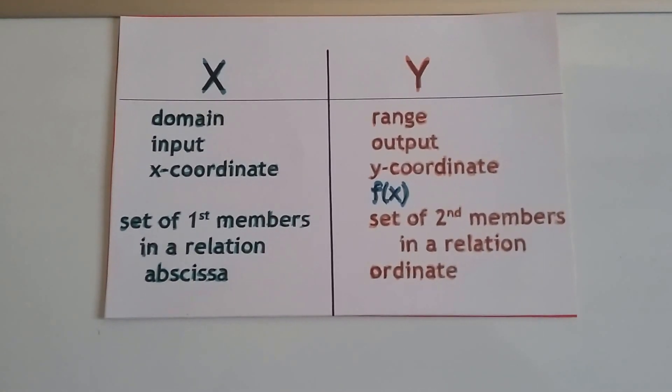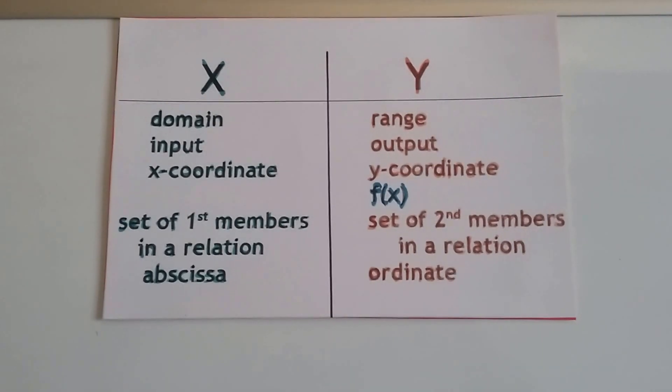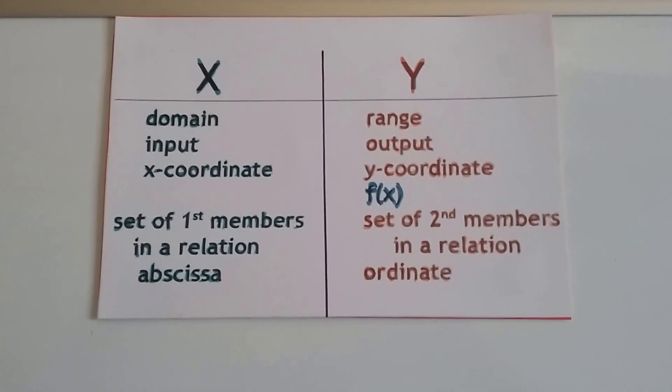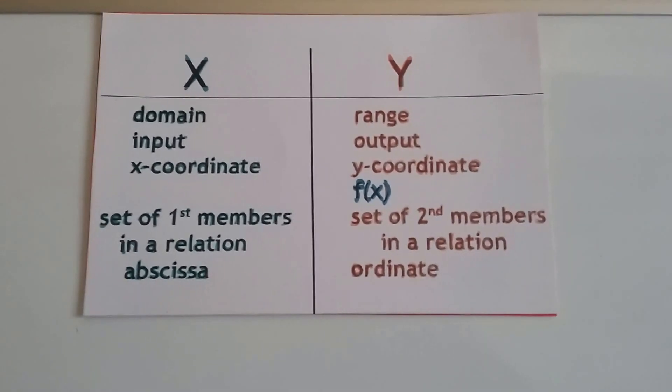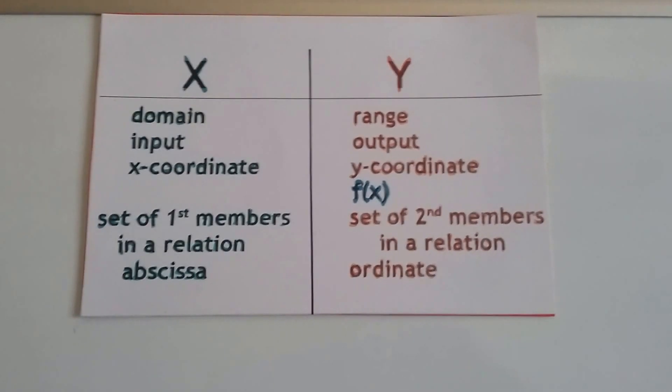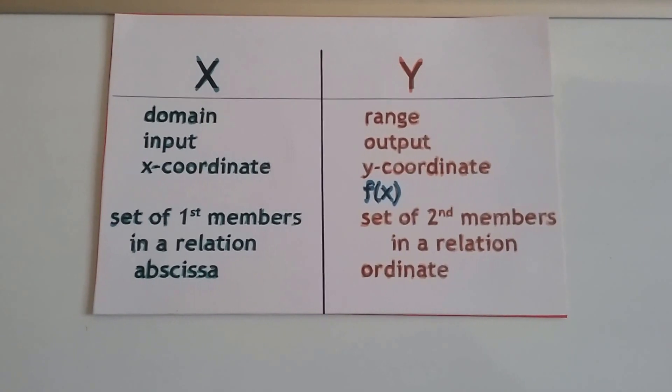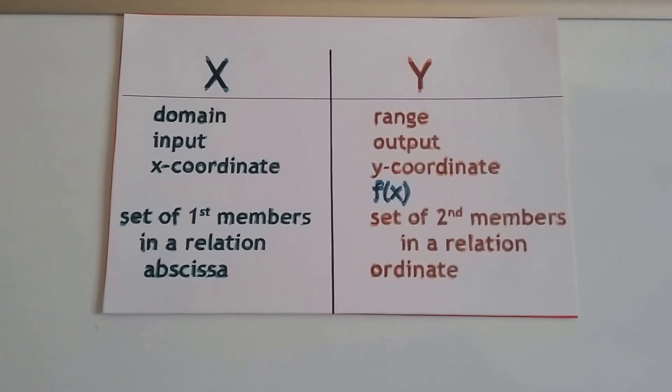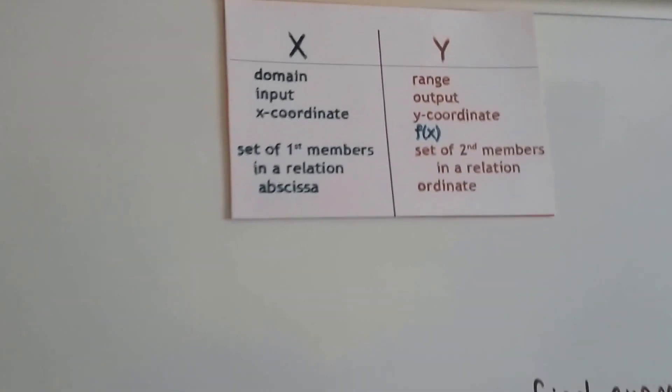We have different names for the x and y values. The x can be the domain or the input. It's the x coordinate. It's that first member in an ordered pair relation. It's also called an abscissa. And the y values are the range, the output, the y coordinate. It's also called the function of x. And it's the second member in an ordered pair relation. And it's also called an ordinate. Maybe if I say it so many times, everyone will have that memorized.